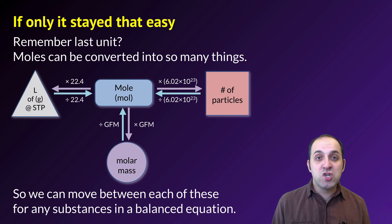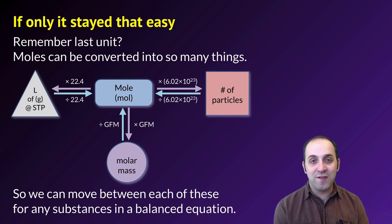So we can actually move between these three different quantities of a substance in any balanced equation and determine the quantity of any other substance produced. It gets a little complicated, but it's really not that hard.